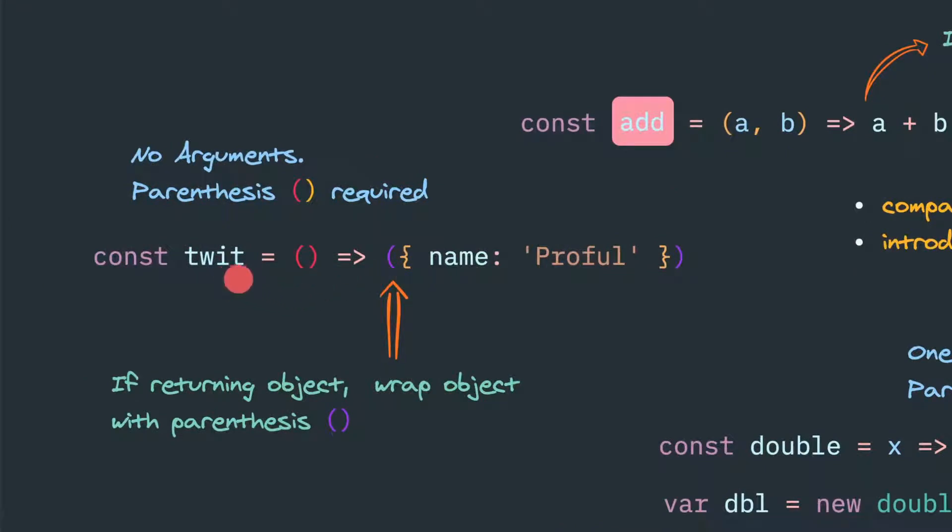This is another arrow function. If it has no arguments, the parenthesis is required. In case of one argument, we don't need to give the parenthesis. Parenthesis is optional.